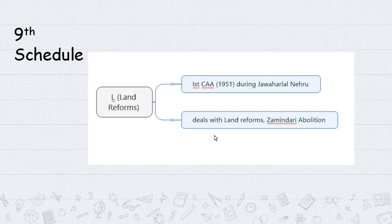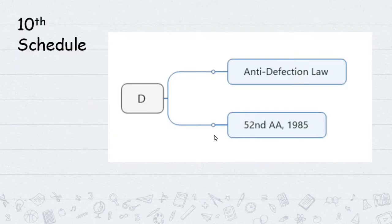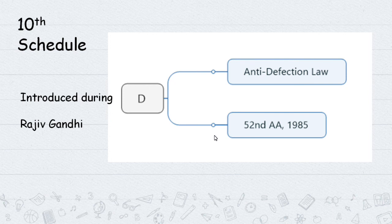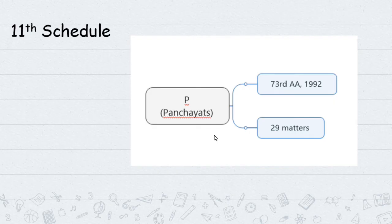The Tenth Schedule contains the anti-defection law, added by the 52nd Constitutional Amendment in 1985. The Eleventh Schedule was added by the 73rd Constitutional Amendment in 1992, covering Panchayati Raj institutions with 29 subjects related to rural planning and administration.